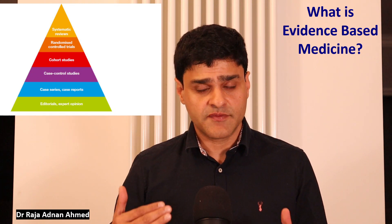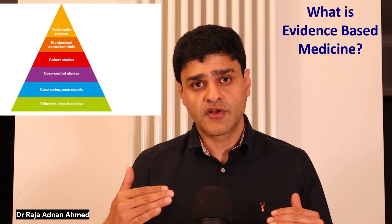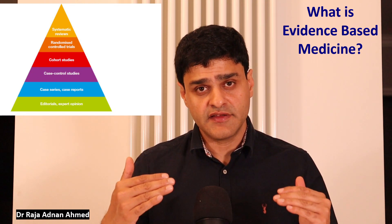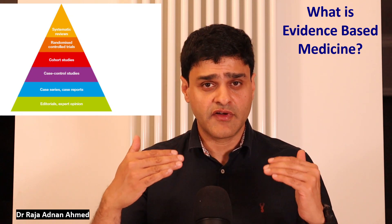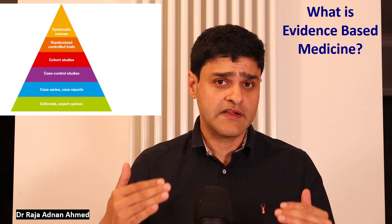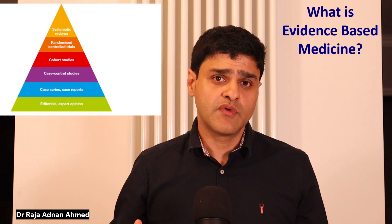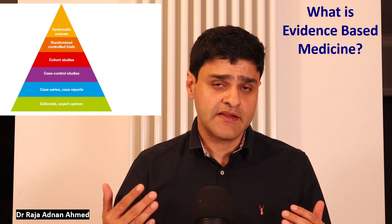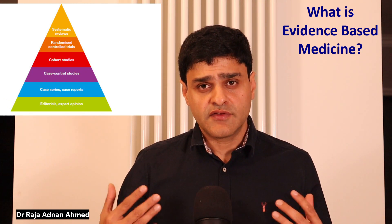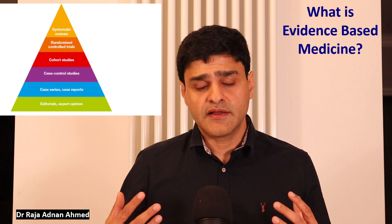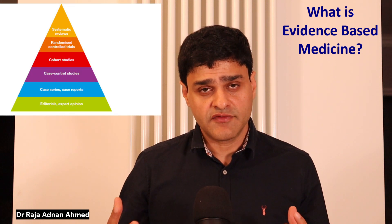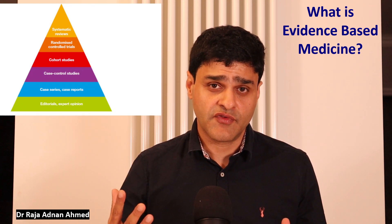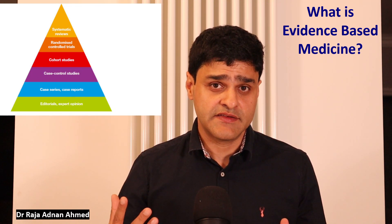The hierarchy starts from expert opinion, then you go up to case studies and case series, then up to randomized control trials, cohort trials, and it goes all the way up to systematic review and meta-analysis. The best evidence — the evidence which has the best weight in the research arena — is that which comes from a meta-analysis.